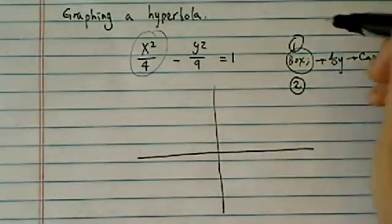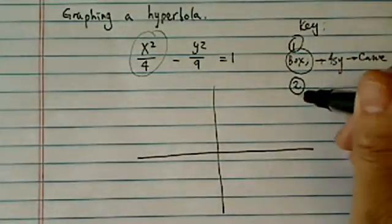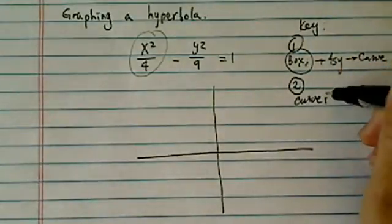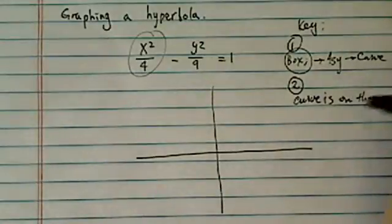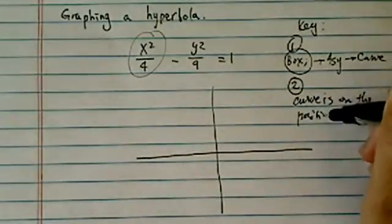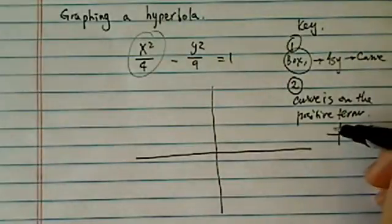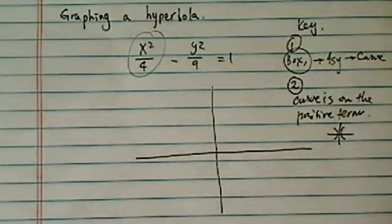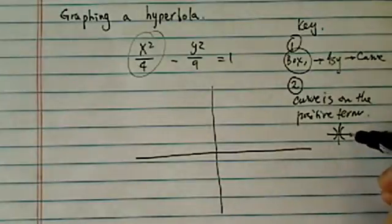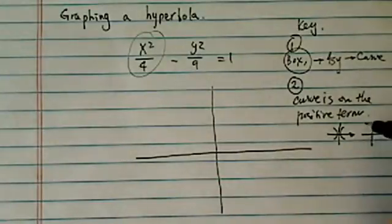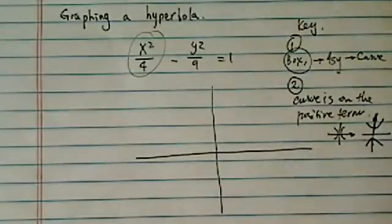Second thing you need to know, the key point, is that the curve is on the positive term. Let me explain what that means. A hyperbola could be x-shaped, that's on the x-axis, or it could be a flipped version of x-shaped, but it's on the y-axis.